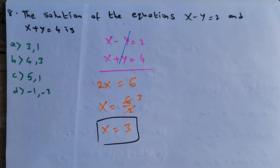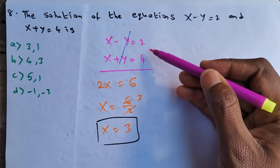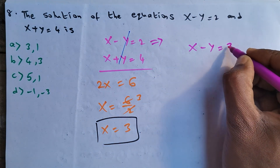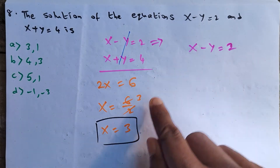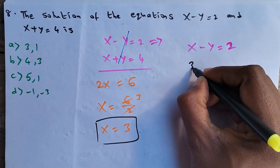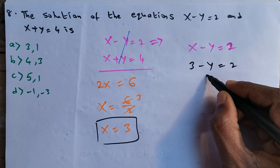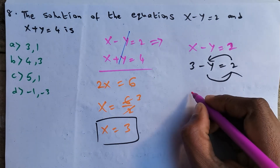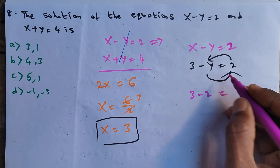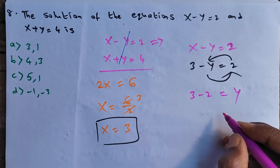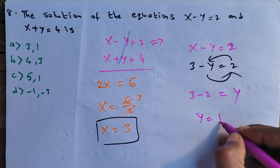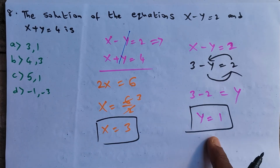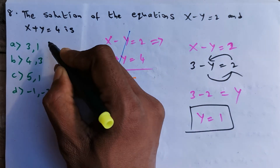Substituting x = 3 in the first equation x − y = 2: 3 − y = 2, so y = 1. Therefore x = 3 and y = 1, and (3, 1) is the solution. Option A is correct.